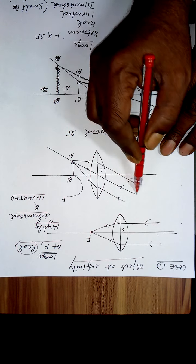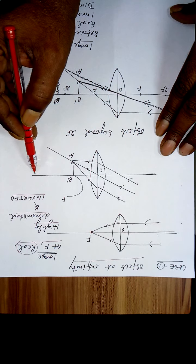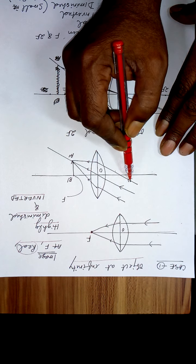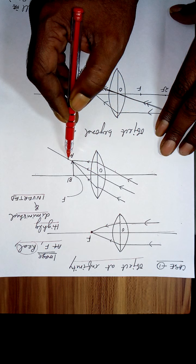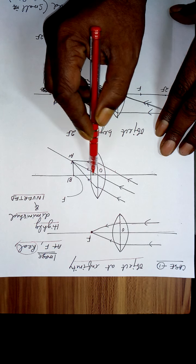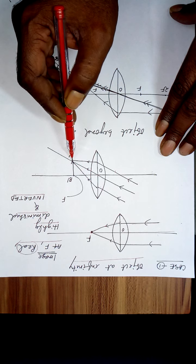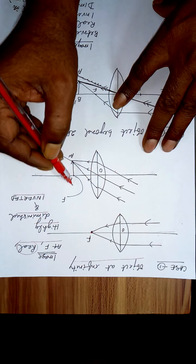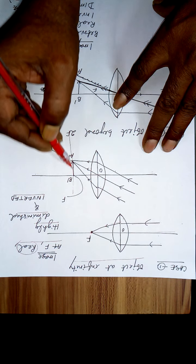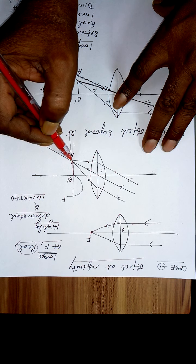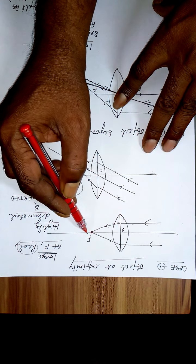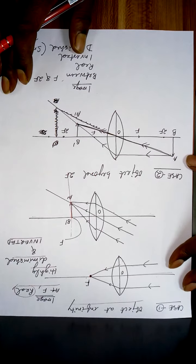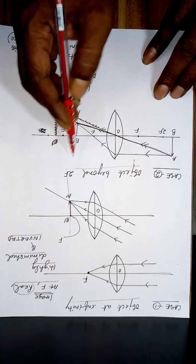If the rays are parallel but not parallel to the principal axis — parallel to each other but inclined — the ray through the optical center goes straight, the others bend toward the thicker part of the lens. They converge on the focal plane, not at the principal focus. The image formed on the focal plane is inverted.